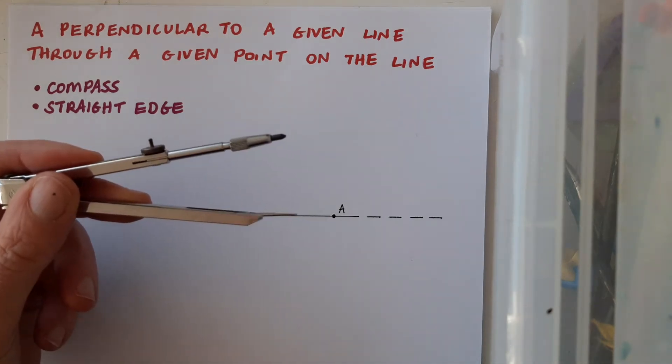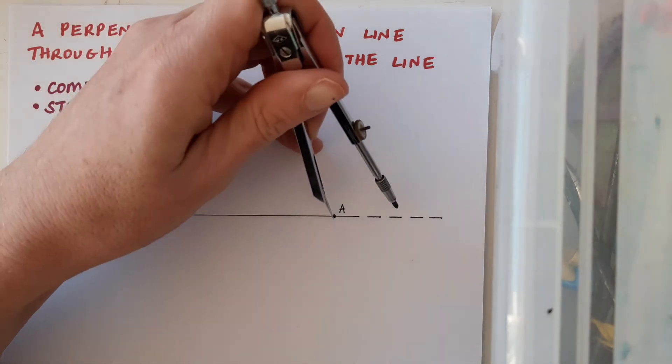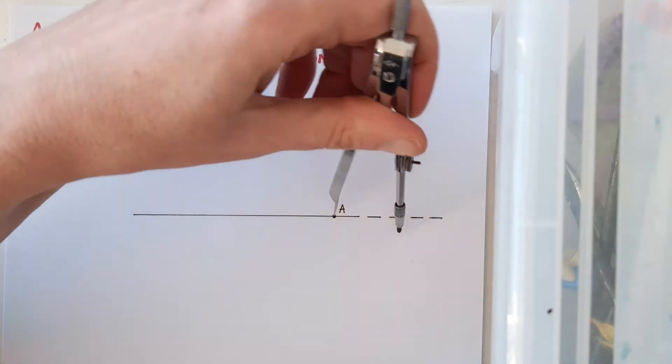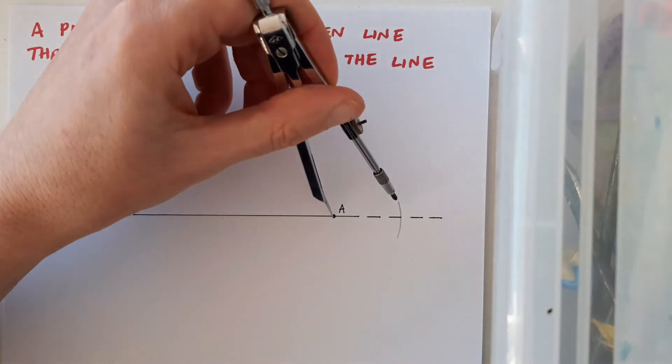I can do this using the compass. I'm going to place the compass at A and I'm going to draw an arc either side of A on the line.